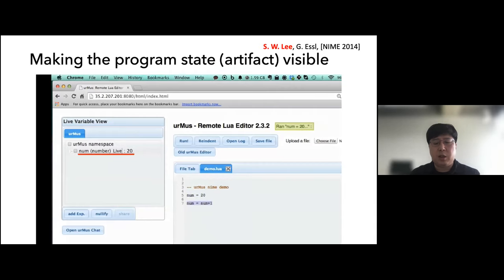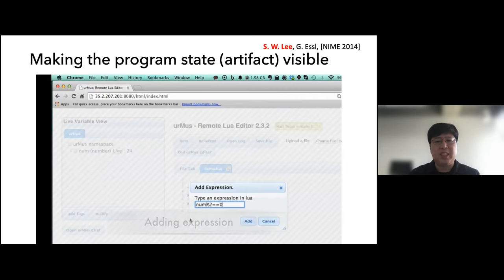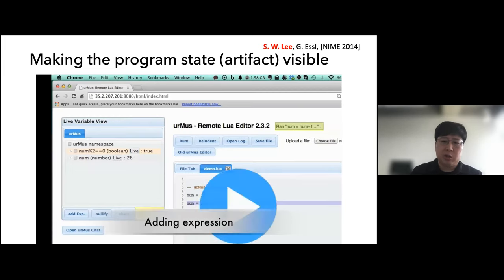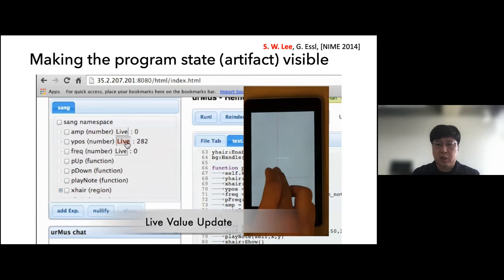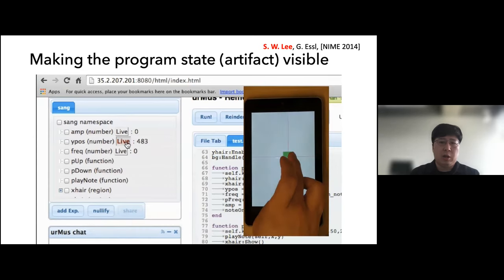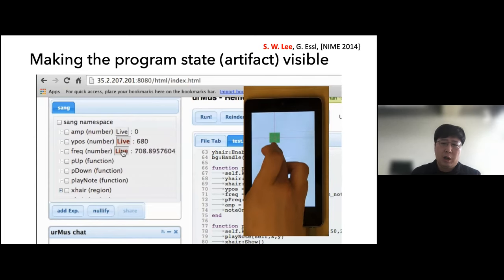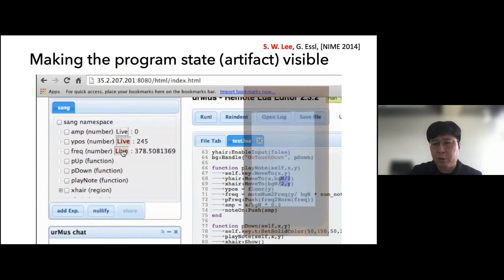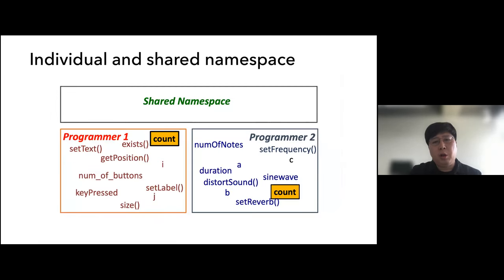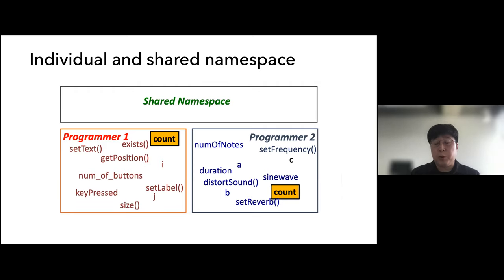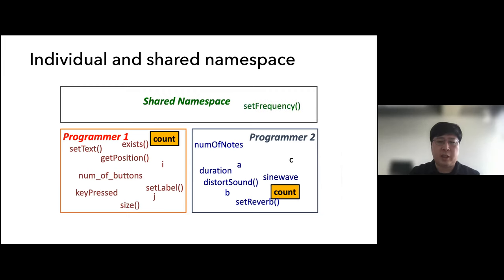To address this, I made a web-based programming environment where you can see the state of a program running on a remote device in real-time — a list of variables, functions, and any expression that can be evaluated with their current values. It's like a debugger except the program is continuously running. I also developed a shared namespace alongside individual namespaces, so programmers can improvise code without worrying about conflicts. When they want to share state, they can export it to the shared namespace for the other person to use.